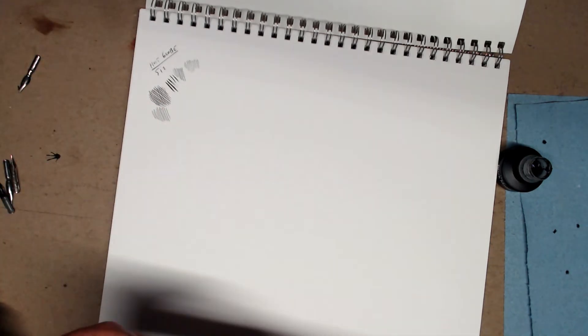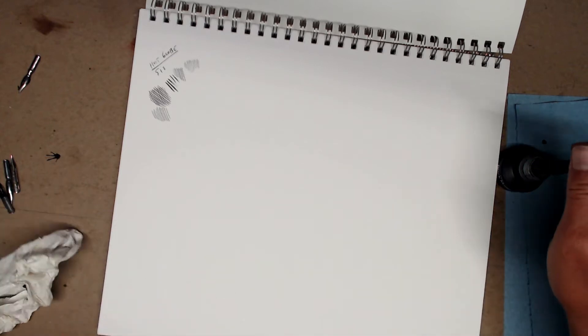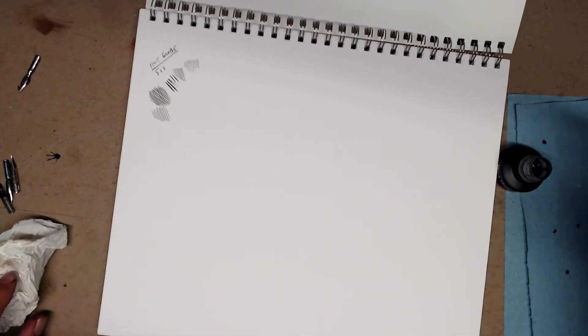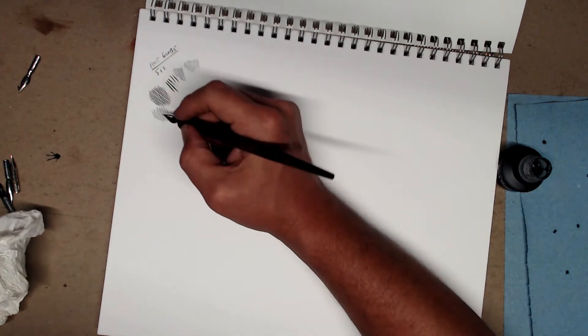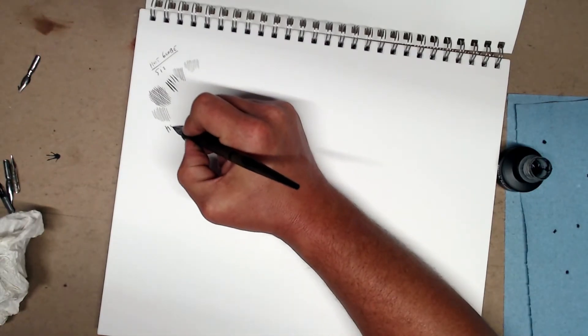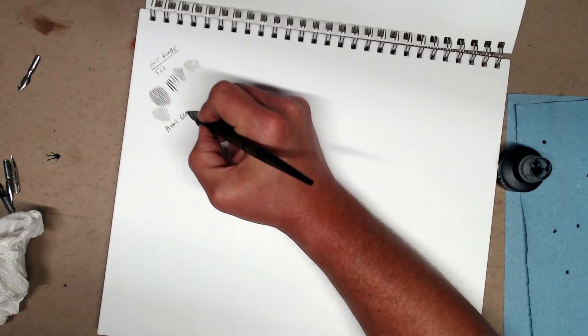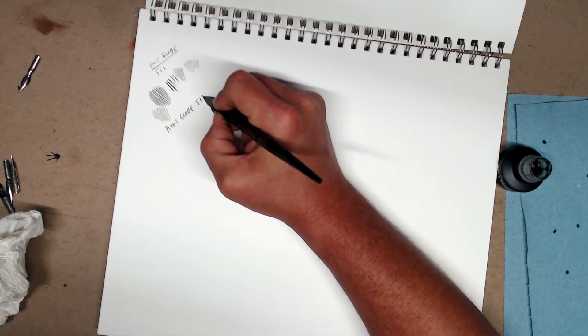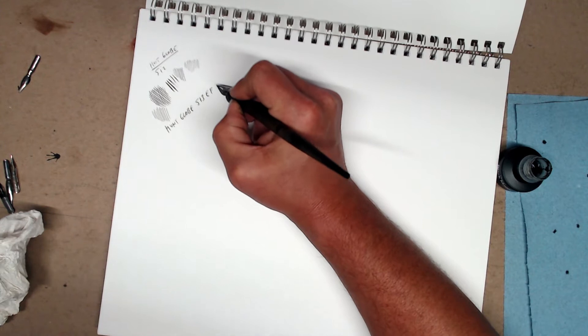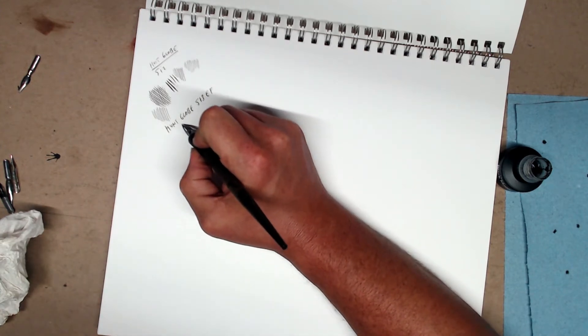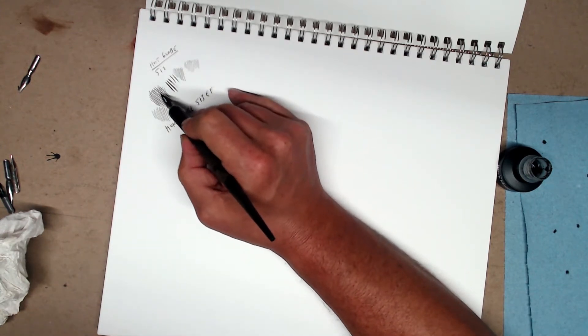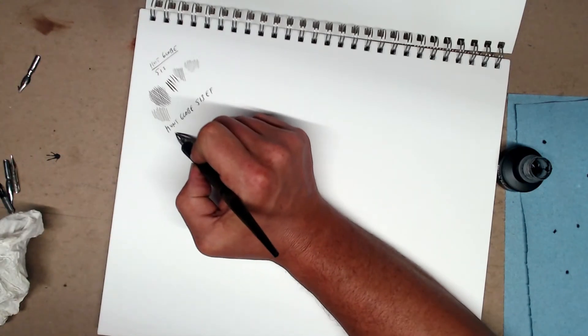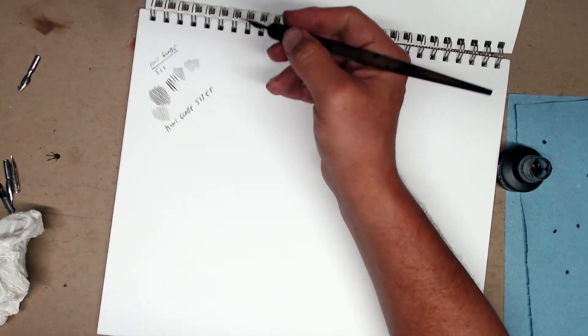And let's take a look at the 513EF. So this is the Hunt Globe 513EF. Notice that this pen is putting down a considerably wider line. So this might be an extra fine. This starts going into fine territories.